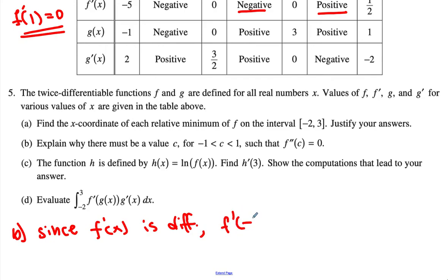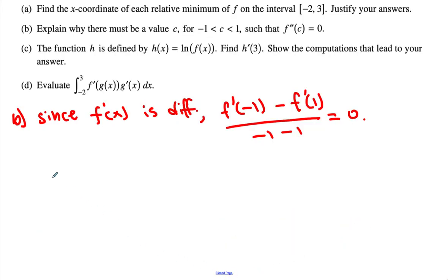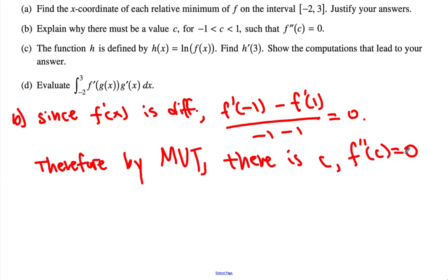we know that f' of negative 1 minus f' of 1 over negative 1 minus 1 is in fact equal to 0. Therefore, by Mean Value Theorem, there is c where f'' of c is equal to 0 where c is greater than negative 1 but less than 1. That's basically what we can say.